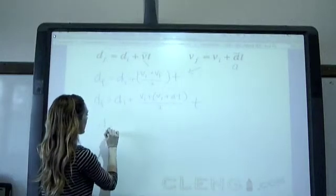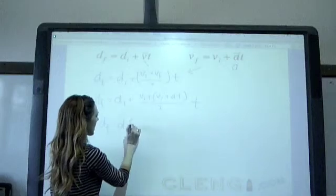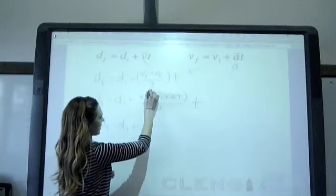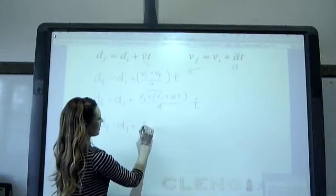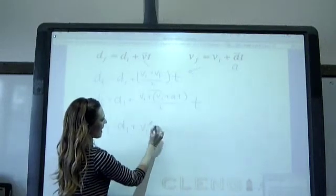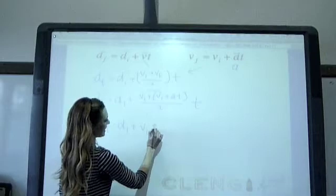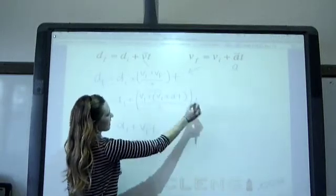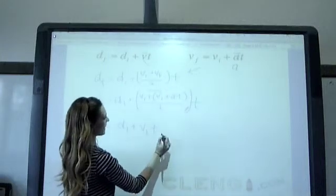we're going to have 2vi divided by 2, so that's going to be vi times that t. I'm going to put this in parentheses so we remember that this whole thing is multiplied by t from right here.